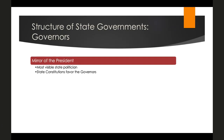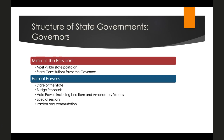This is both a function of formal powers we'll discuss, and also the fact that in many states the legislatures are not particularly professionalized. The governor is in office year-round and is a single person, so they can act more efficiently and expediently, while state legislatures are often part-time positions and are not in session year-round. Much like the president gives a State of the Union address, the governor gives a State of the State address and issues budget proposals that shape the legislative priority and agenda.